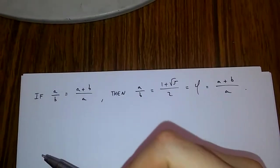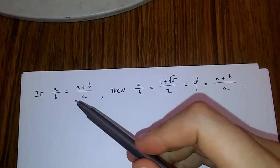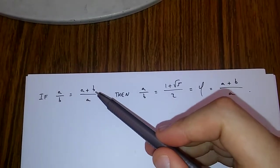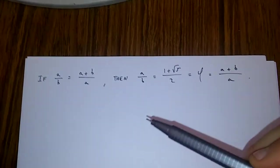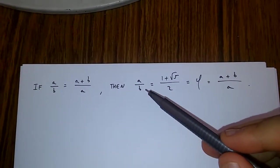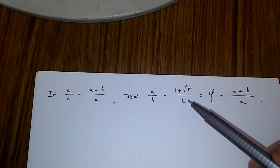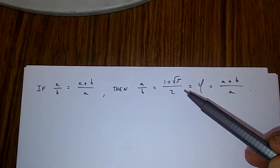In this video, I'm going to be proving to you that if a/b is equal to (a+b)/a, then a/b is equal to (1+√5)/2.